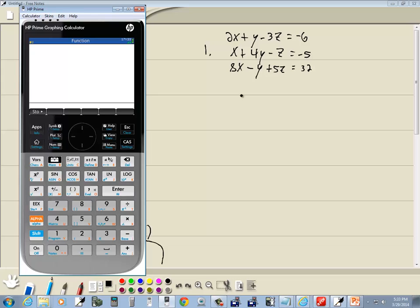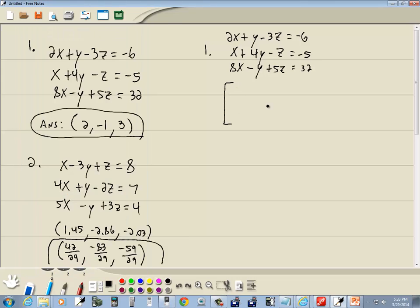We're going to input this into a matrix. And how we do that is we drop the variables and equals and keep the numbers and our signs. So I'll have 2, 1, negative 3, negative 6. 1, 4, negative 1, negative 5. 8, negative 1, 5, 32. Let me double check all those.